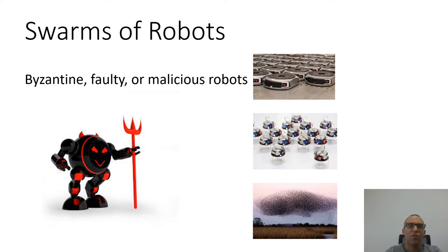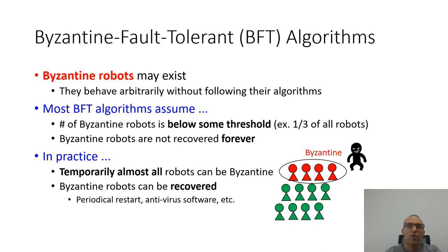When dealing with robots in practice, we must consider the presence of Byzantine faulty or malicious robots. These robots may not follow a given algorithm due to experiencing a fault or due to a malicious takeover that may disturb the other robots — for example, a behavior caused by a bug in the software of honest robots or a malicious malware injection. These potentially Byzantine robots may be temporarily or constantly controlled by an adversary trying to prevent the honest robots from completing their tasks.